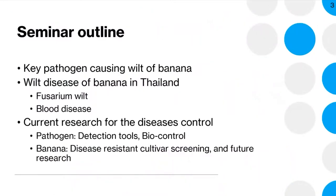My talk today is about the key pathogens causing wilt diseases of banana, which are Fusarium wilt and blood disease. Basic information about the disease will be discussed, as well as the research that we have been doing — for example, detection tools, biological control, and disease-resistant cultivar screening.